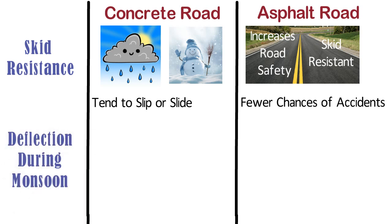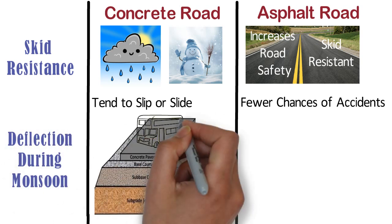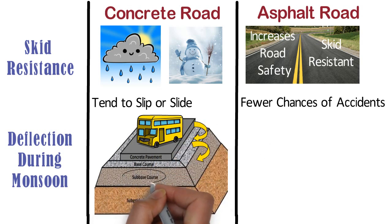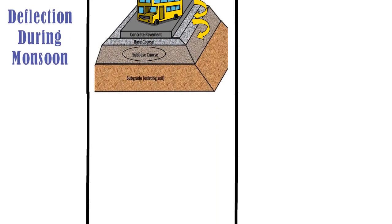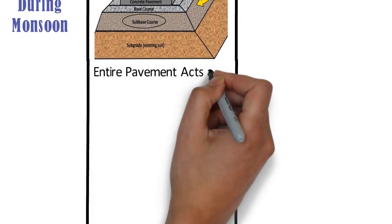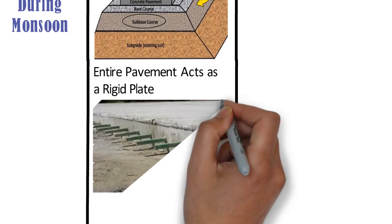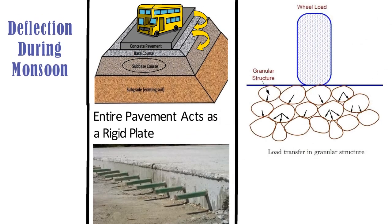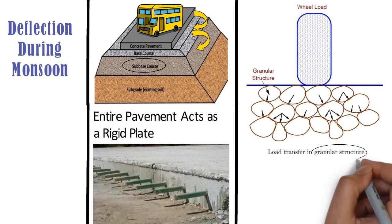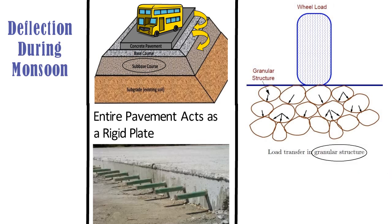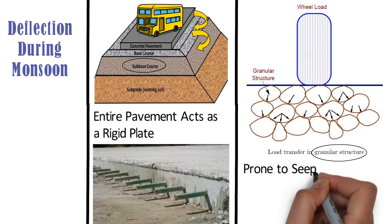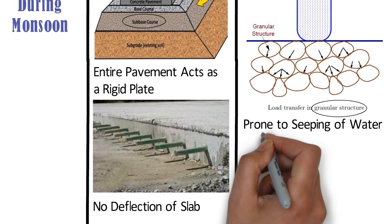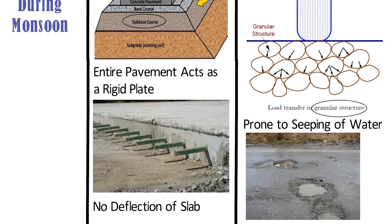Deflection during monsoon. In case of concrete roads, vehicle loads are transferred to sub-base soil by the flexural strength of the pavement, and the entire pavement acts like a rigid plate. Dowel bars are provided in the intervals so that there is no deflection of the slab due to vehicle load. In case of asphalt roads, the vehicle load is transferred grain to grain through the contact of the aggregates via the granular structure. Hence, during rainy season these roads are prone to seeping of water and potholes are formed due to continuous movement of traffic.